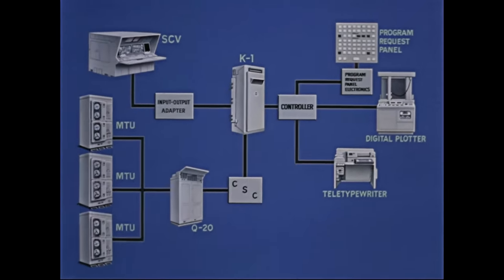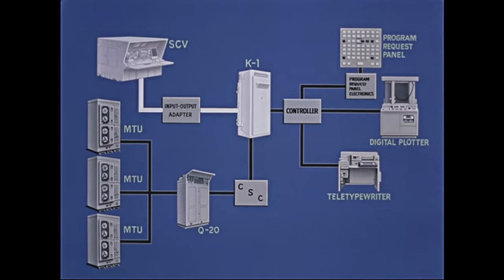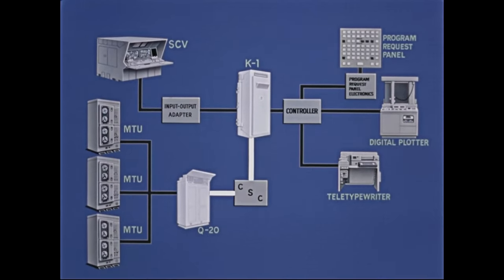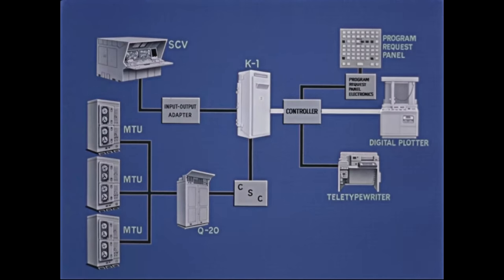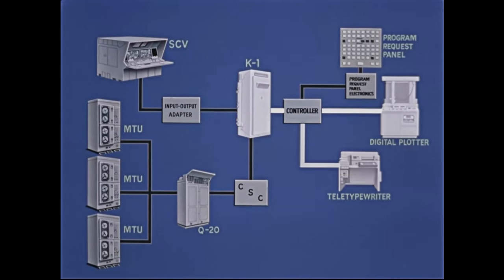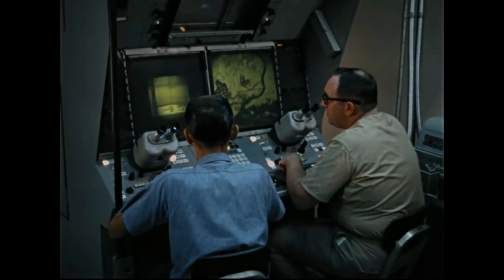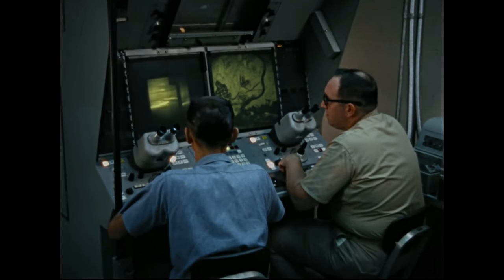This then is the PI station system: the K-1 computer connecting through Channel A to the stereo comparison viewer, through Channel B to the Q20 computer and its linkage with the magnetic tape units, and through Channel C to the digital plotter, the teletypewriter, and the program request panel and its associated electronics unit. The PI operator can put this system to work in various ways by selecting and using the appropriate program. To see what the system is capable of doing, we'll examine some of these programs.